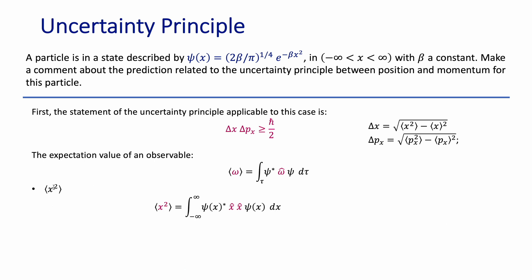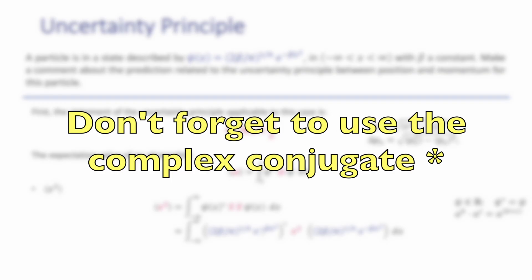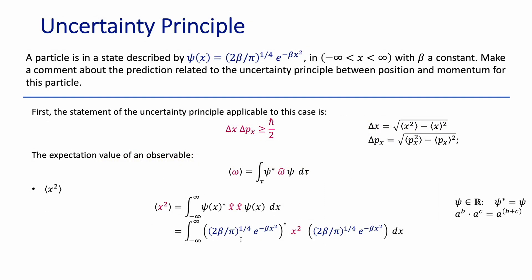Now we calculate the expectation value of position squared, ⟨x²⟩ — which is not the same as the square of the expectation value. The operator is x̂², which means applying the position operator twice. Since the position operator is multiplication by x, applying it twice gives multiplication by x². The setup is similar to before: substitute the wave functions, remembering to complex conjugate if the function is complex. After factoring out constants, the integrand becomes x² times the exponential squared, giving e^(−2βx²).